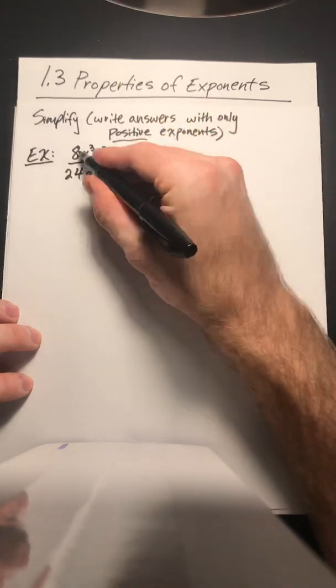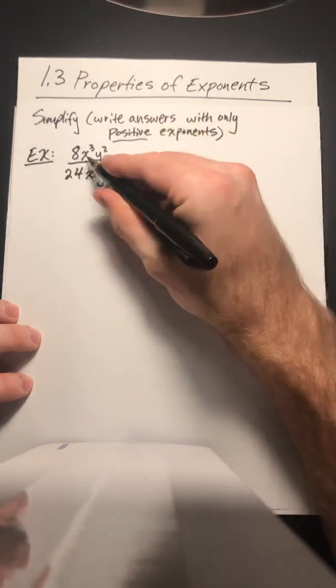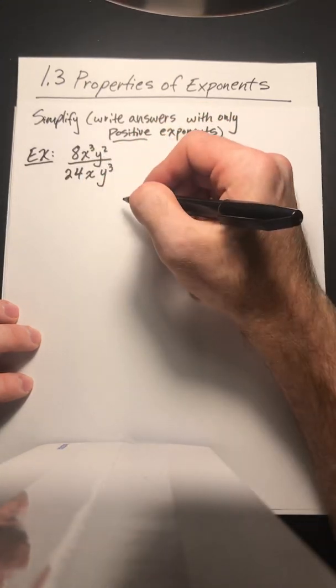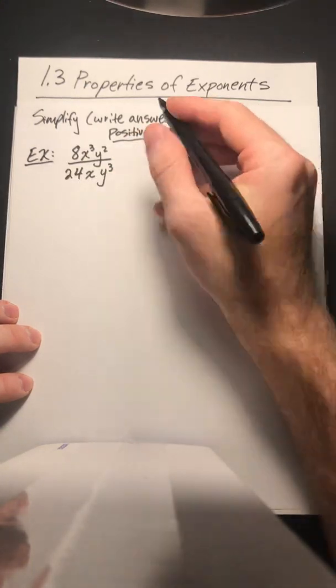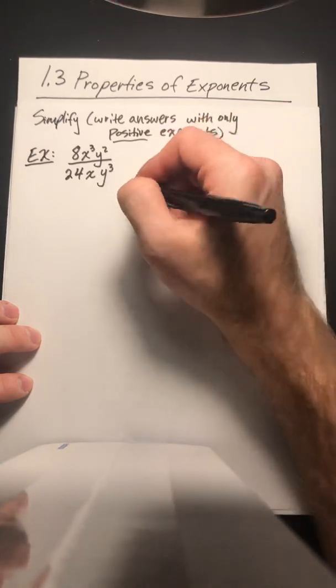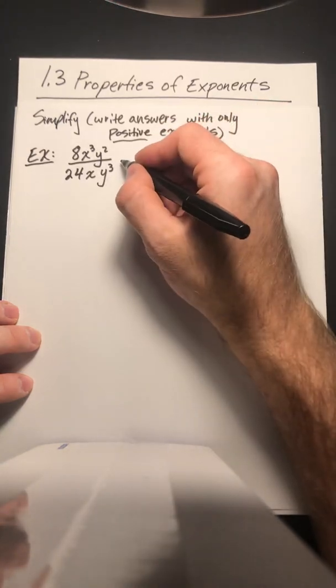First thing I have, I've got 8x cubed over y squared divided by 24xy cubed. So when you're in doubt with these types of problems sometimes it's good to just write it out.